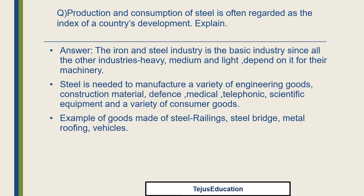Production and consumption of steel is often regarded as the index of a country's development. The iron and steel industry is the basic industry since all other industries — heavy, medium, and light — depend on it for their machinery. Steel is needed to manufacture a variety of engineering goods, such as railings, steel bridges, etc.